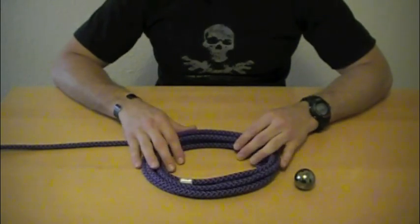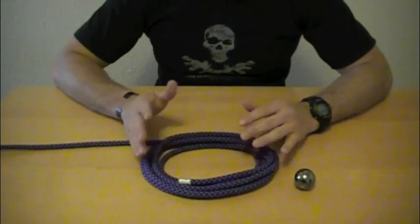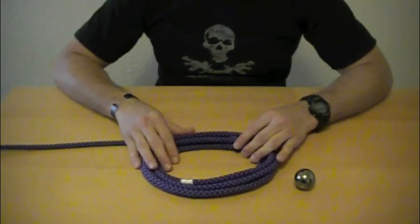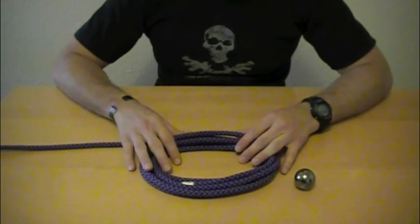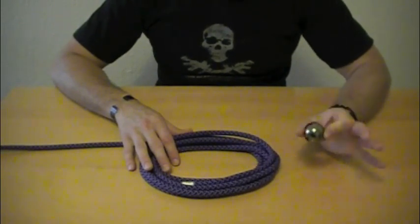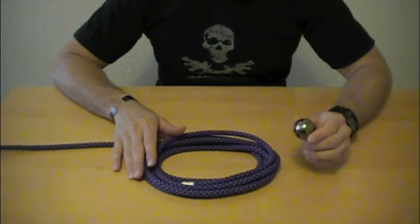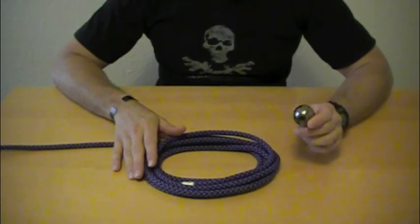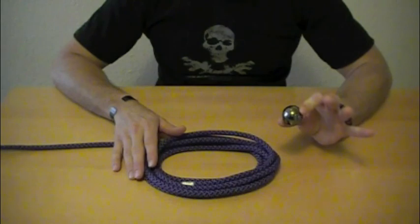The Monkey's Fist is typically tied in the end of a line to create a weighted end, so you can heave the line over great distances. Optionally, you can use a weighted core or choose not to use one. Today we're going to be showing a weighted core with this big marble here.